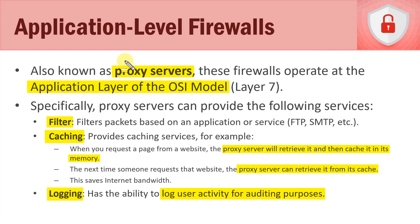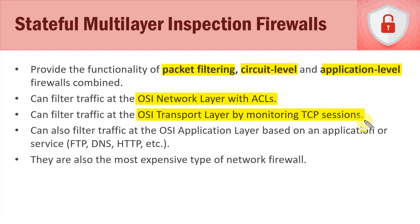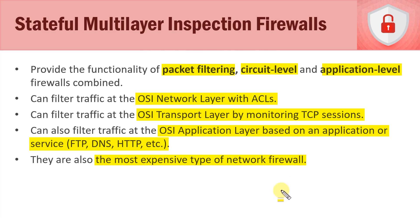The final type is stateful multi-layer inspection firewalls, which are really a combination of all the firewall types we've discussed rolled into one very powerful firewall. They provide the functionality of basic packet filtering, circuit level, and application level firewalls all combined. They can filter traffic at the network layer using ACLs, at the transport layer by monitoring TCP sessions, and at the application layer by inspecting specific applications and services at OSI layer 7. As you can imagine, they are very powerful but also the most expensive type of network firewall.